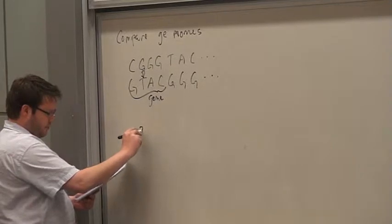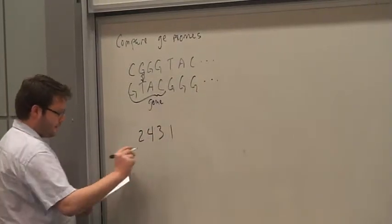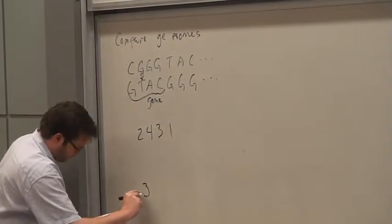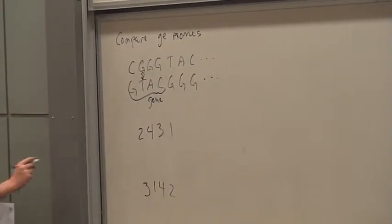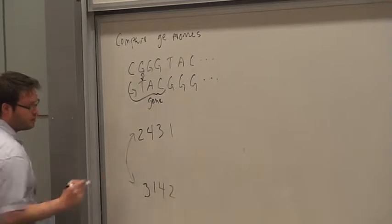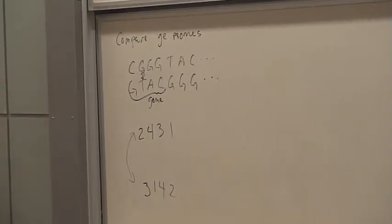So in one species, you might see the genes in the order 2, 4, 3, 1. And in the other species, you might see the same exact genes in the order 3, 1, 4, 2. And you might wonder, how did we get here to here? And there's a lot of possible operations.